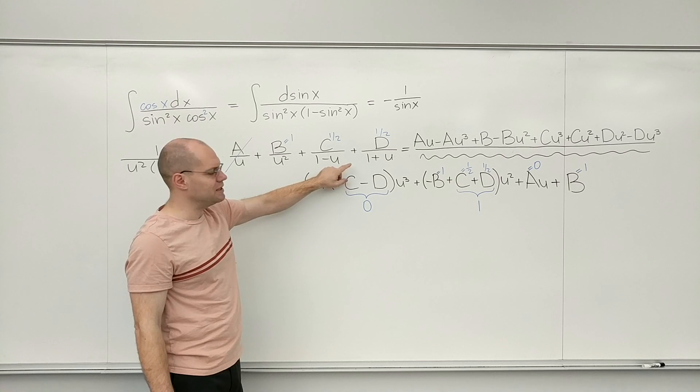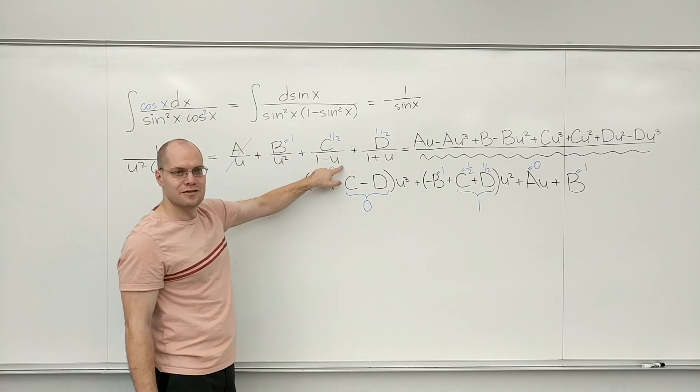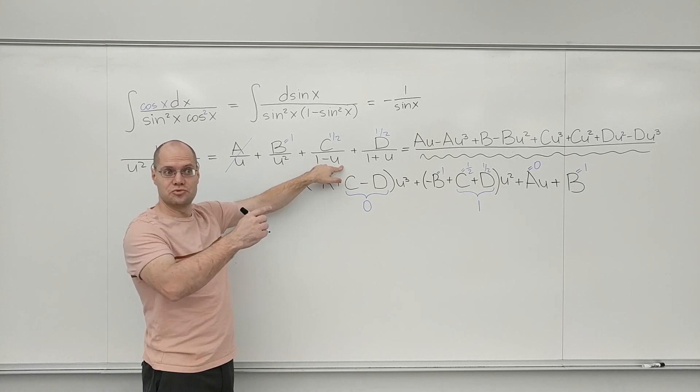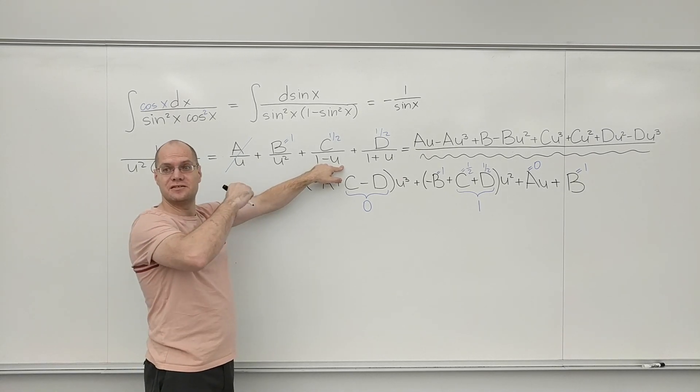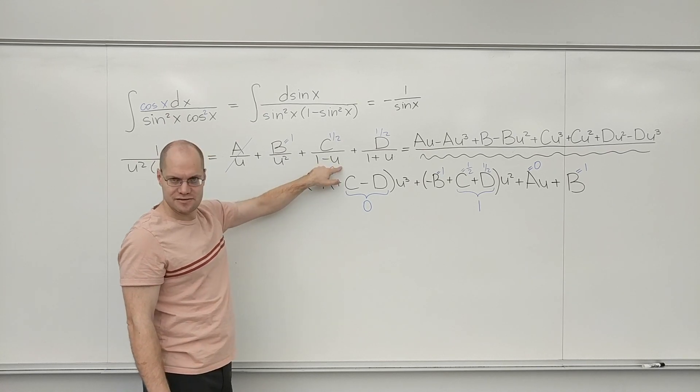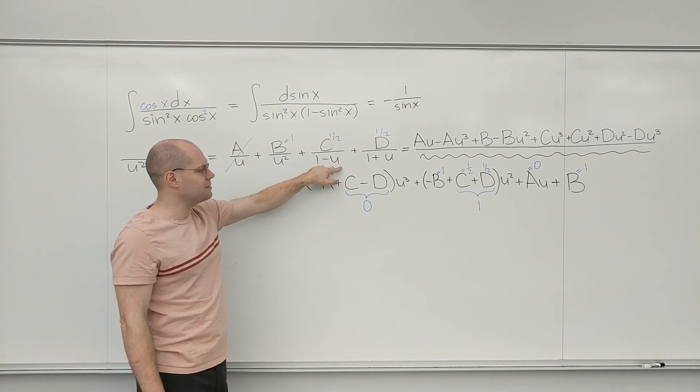Now here, you have to be careful. Be careful not to call this log of 1 minus U. Because when you take the derivative of that, there will be an additional minus sign by the chain rule. So this is minus log of 1 minus U.